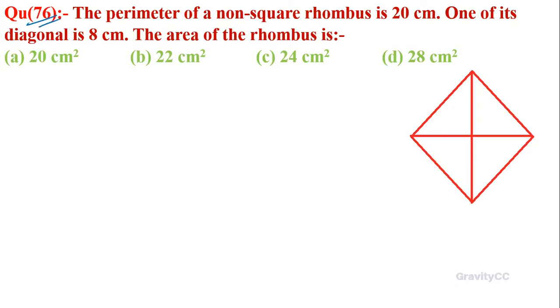Chapter area, question number 76. The perimeter of a non-square rhombus is 20 cm and one of its diagonal is 8 cm. So the area of the rhombus is? The question is given: the perimeter is 20 cm.